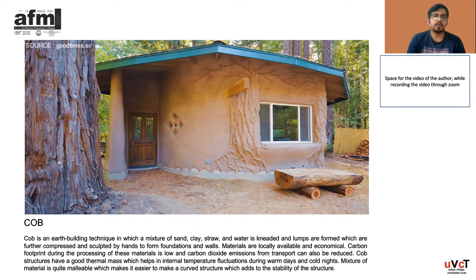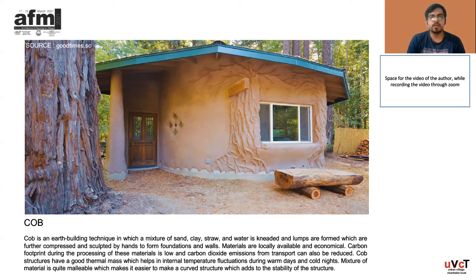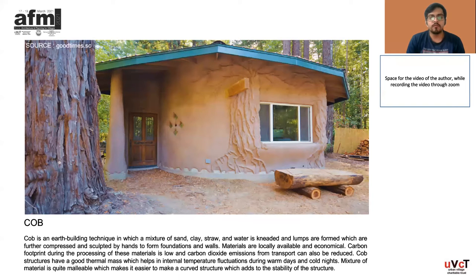Cob is an earth-building technique in which a mixture of sand, clay, straw, and water is kneaded and lumps are formed, which are further compressed and sculpted by hand to form foundations and walls. Materials are locally available and economical. Carbon footprint during the processing of these materials is low, and carbon dioxide emissions from transport can also be reduced. Cob structures have a good thermal mass, which helps moderate internal temperature fluctuations during warm days and cold nights. The material is quite malleable, which makes it easier to construct structures that add to the sustainability of the building.